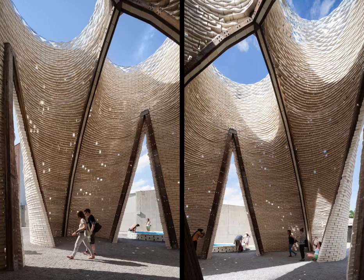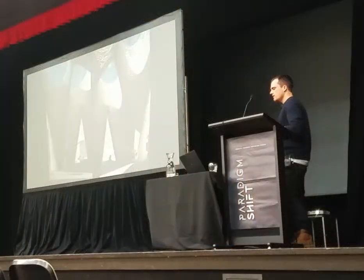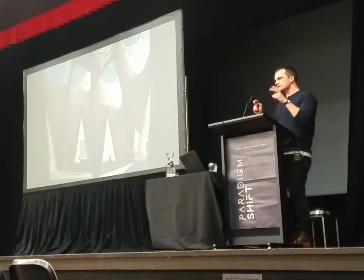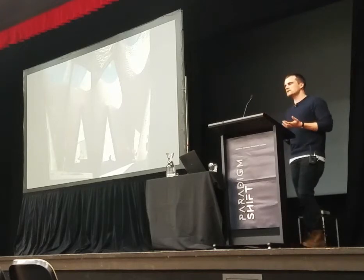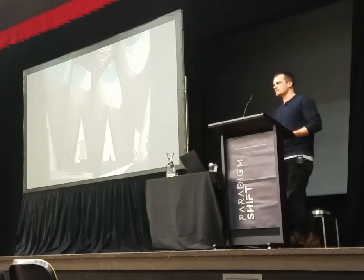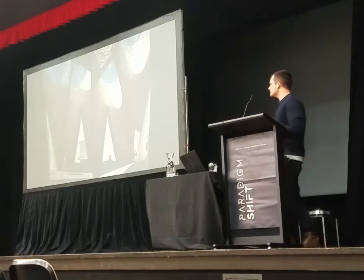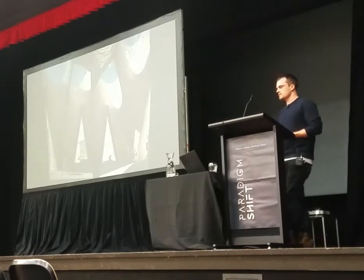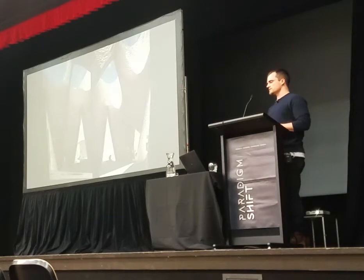What was interesting is we were able to express the bottom-up collective intelligent process that led to the structure in the physical structure itself. We took every one of those small quarter brick modules, and whenever one wasn't contributing directly to the structural performance of the surface, we took it out. It formed these little windows in the structure that let light in — their placement looks really random and organic, but just like everything in nature, it's not random. It's a direct physical embodiment of collective intelligence.